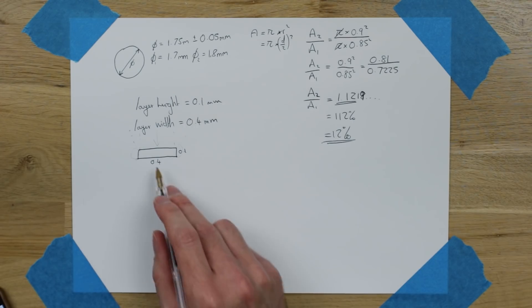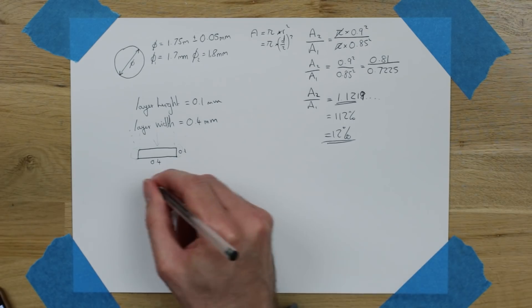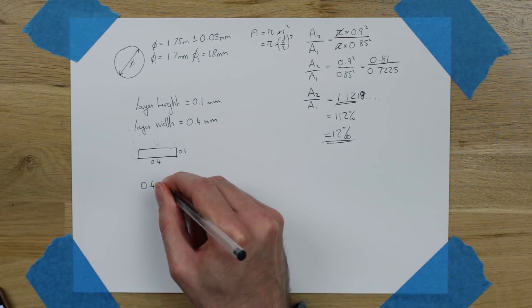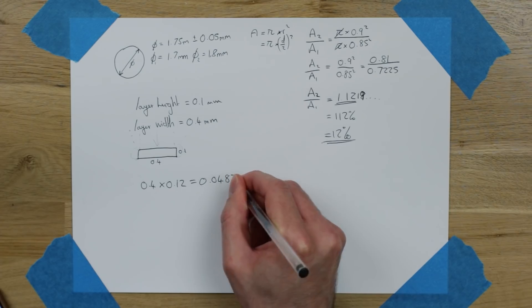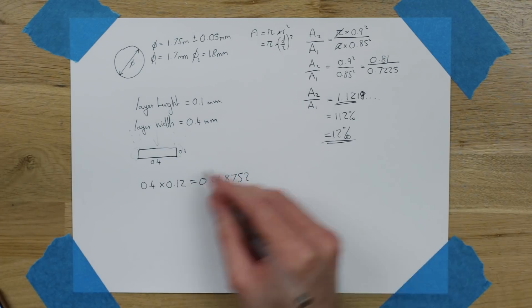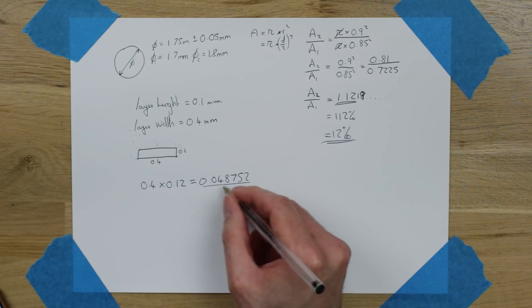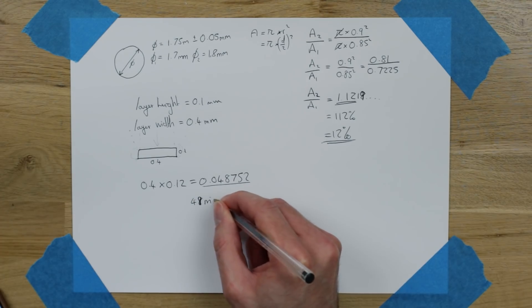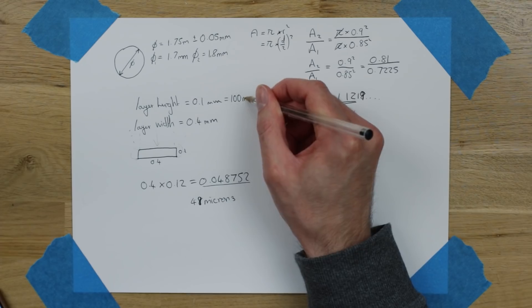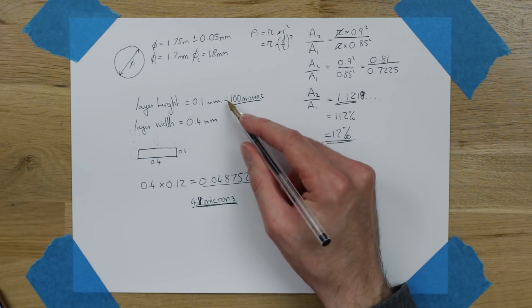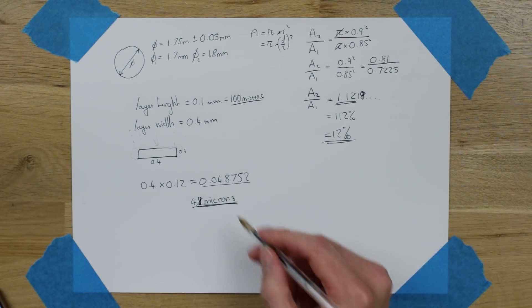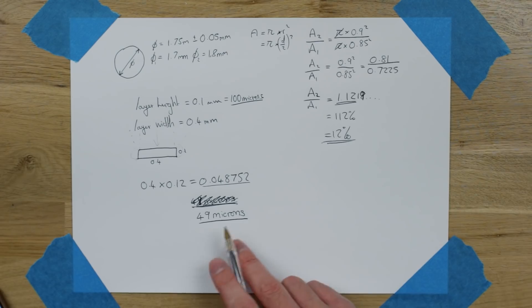Well, it's this 0.4 that's changing. And this 0.4 is going to change by about 12%. So 0.4 millimeters times 12%, which is 0.12, gives us 0.048752. I actually use this number here. Anyway, this is the amount that it's changing by. So that is maybe 49 microns. For scale, this would be 100 microns. So your variation then in filament width is changing by half your layer height. Nearly. It's very close. That's quite a lot of change.